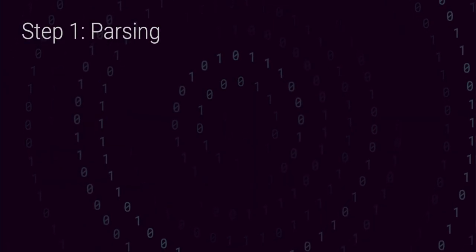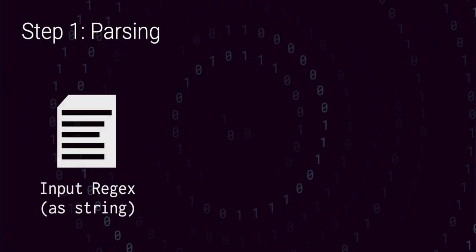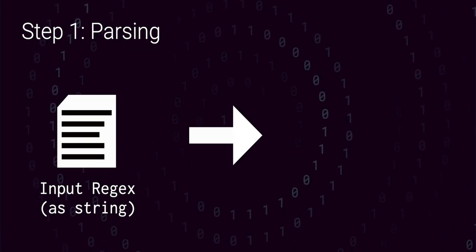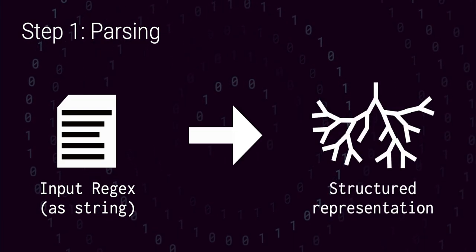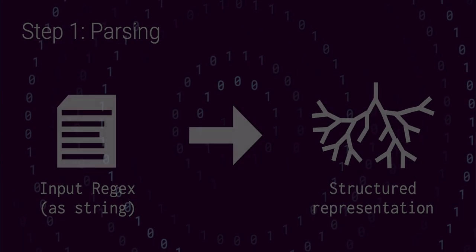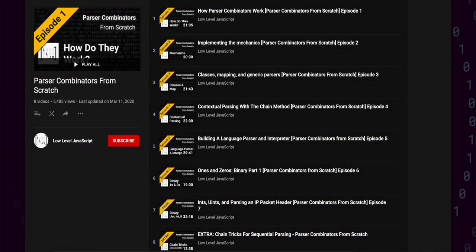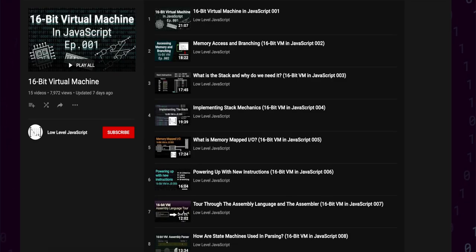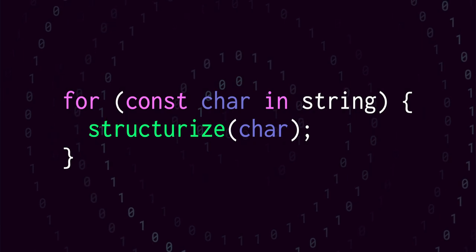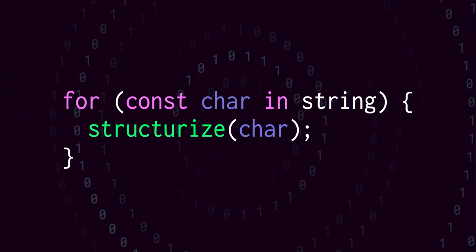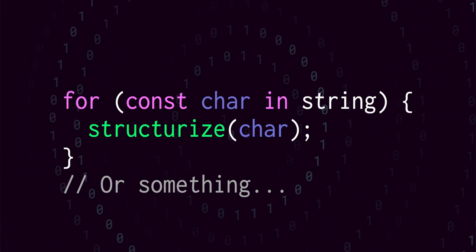The first thing we're going to need to do is take our regular expression string and parse it, turning it into a data structure that we can work with programmatically. In the past on this channel we've used parser combinators to tackle parsing tasks, since they're extremely composable and intuitive, and there is a whole series on this channel about building a parser combinator library. But regular expressions are so simple in syntax that we can parse them just by looping over all of the characters and building up a stack of results, so we're going to use that approach instead.